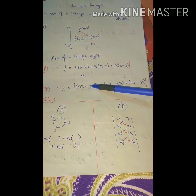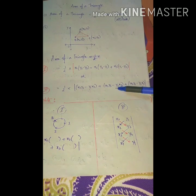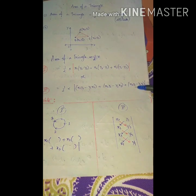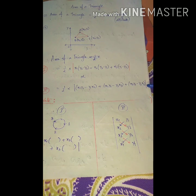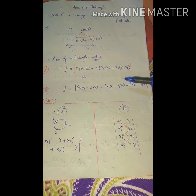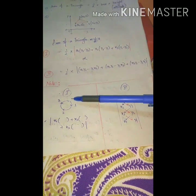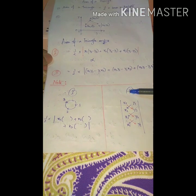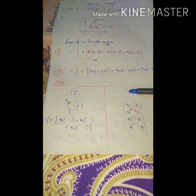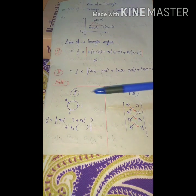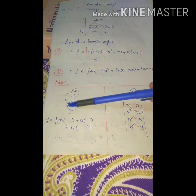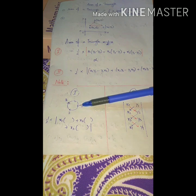This is the formula for the area of a triangle using coordinates. There are two techniques to help remember this formula. Let's see how to apply them.